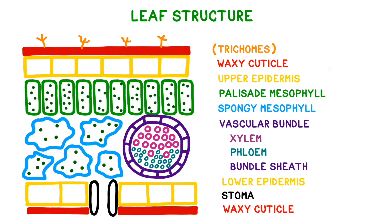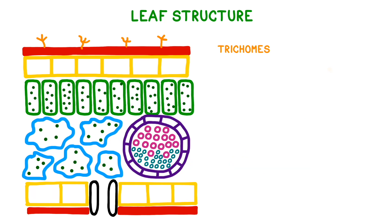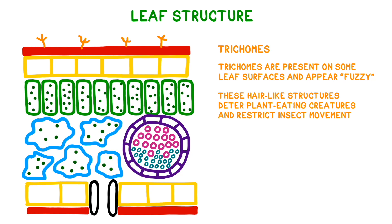Many leaves have additional structures on their surface known as trichomes. These can perform a variety of different functions, but they often make the leaf appear a bit fuzzy. These tiny hair-like structures can deter plant-eating organisms and can also restrict insects from crawling over the surface of the leaf.